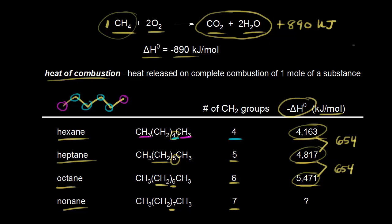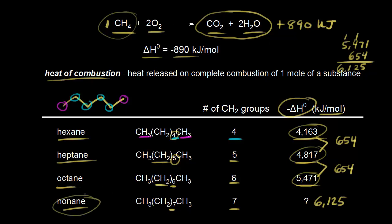So we have 5,471 and we're adding 654 to that. That gives us 6,125 kilojoules per mole as a pretty good estimation for the heat of combustion of nonane.